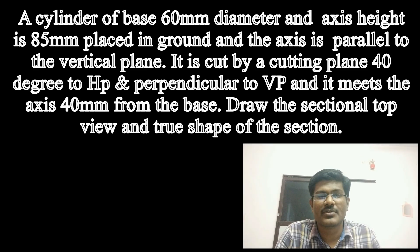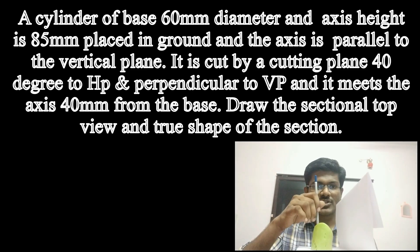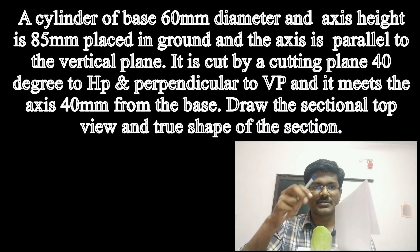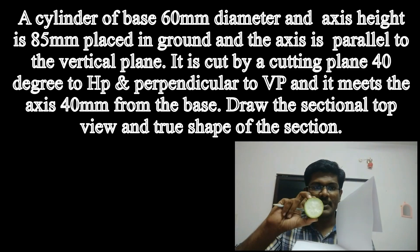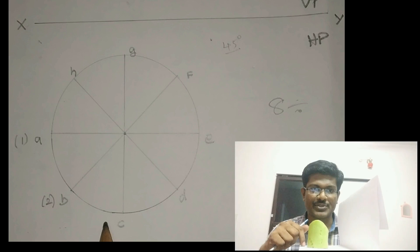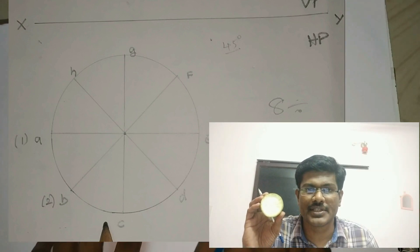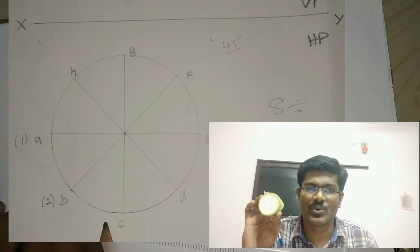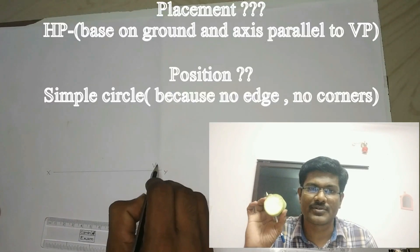To draw the first step we have to identify the placement and position. The axis of the cylinder is parallel to VP, and at the same time the base rests on HP. So that's why we have to draw the first step in HP. It's a circle — it's not having any corners and edges, so positioning will be very simple. Just draw a circle in HP.